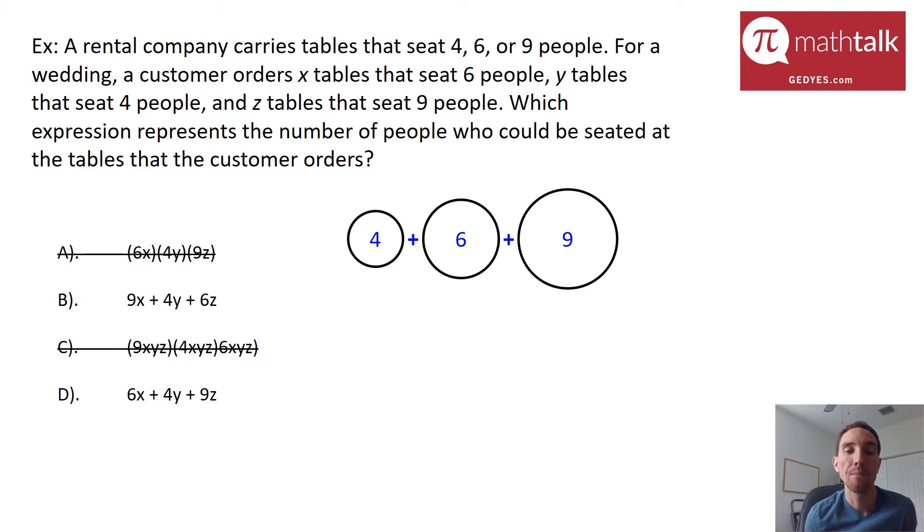In our example, they said that the four seater was set for Y tables, the six seater was for X tables, and the nine seater was for Z tables. So we need to find the answer choice that has 4Y, 6X, and 9Z. And when doing that, it ends up being answer choice D.